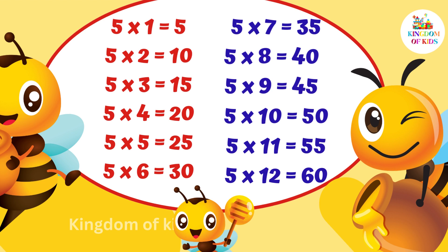5 7s are 35, 5 8s are 40, 5 9s are 45, 5 10s are 50, 5 11s are 55, 5 12s are 60.